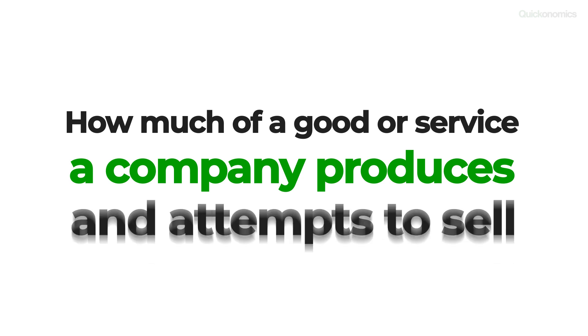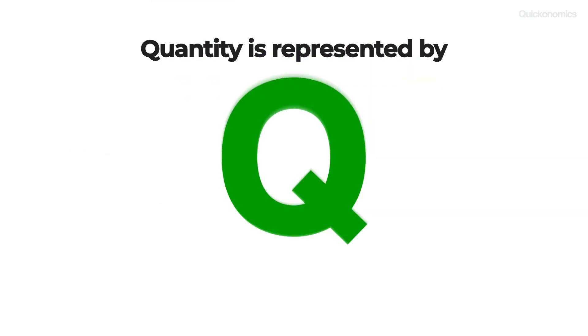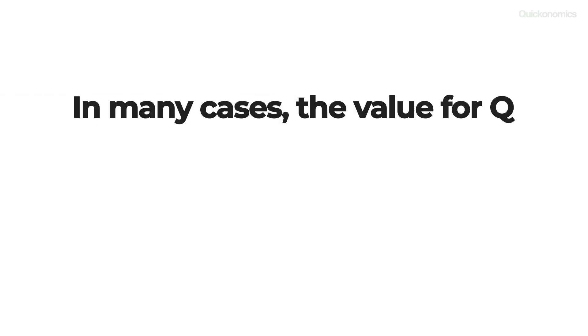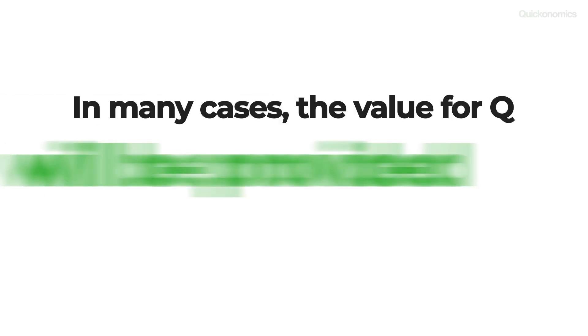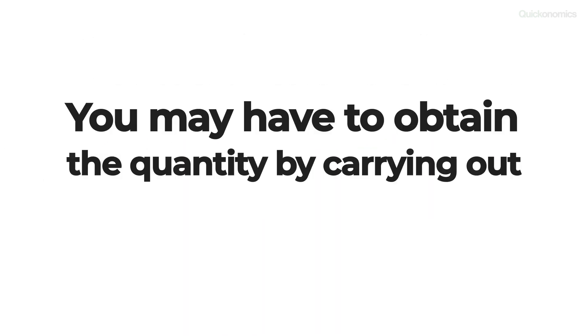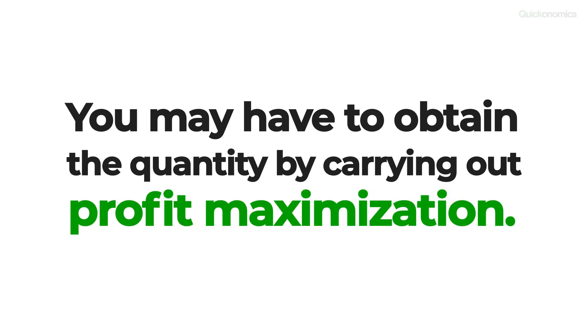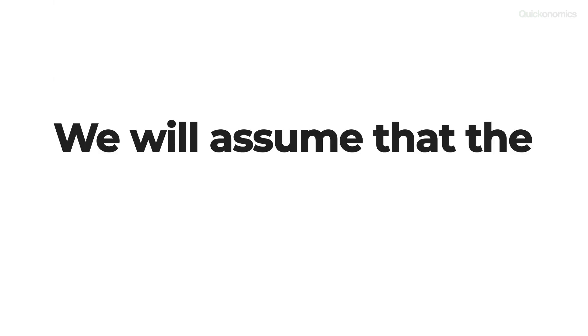Let's start with step one: finding the total quantity. The quantity describes how much of a good or service a company produces and attempts to sell on the market. It is commonly represented by the capital letter Q. In some cases, you may also see a lowercase q to represent quantity, usually to emphasize that the quantity is small. In many cases, the correct value for Q will be provided as part of the problem. If not, you may have to obtain the quantity by carrying out profit maximization first. For now, we'll assume that the quantity is known.